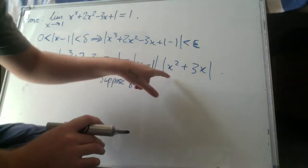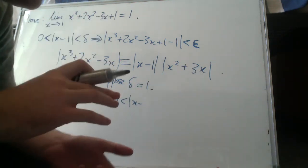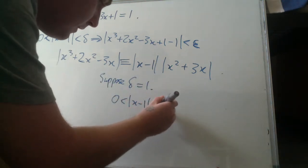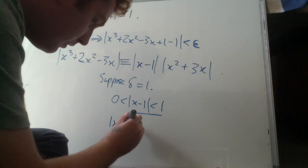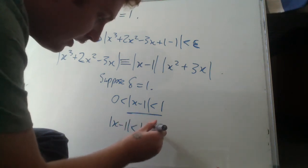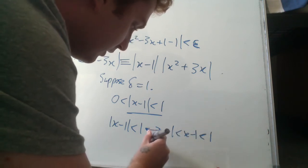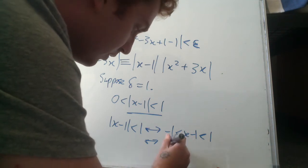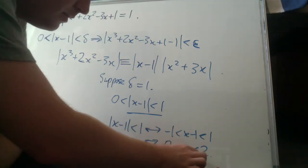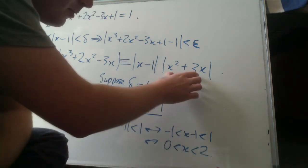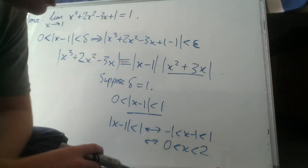Yep. So what will this equal? So what are the upper and lower bounds for this if delta equals 1? So again, let's just consider that. So you get x minus 1 less than 1, so that is equivalent to minus 1 less than x minus 1 less than 1, which is equivalent to add 1, 0 less than x less than 2. Okay, so now we can use this upper and lower bound to find the upper and lower bound of the polynomial of the polynomial here.